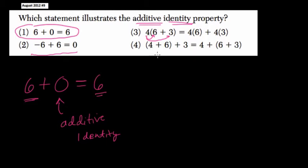4 is an example of the associative property. It would be commutative if you change the order, like 4 plus 3 plus 6. That would be commutative. It wouldn't change, but the order changes.